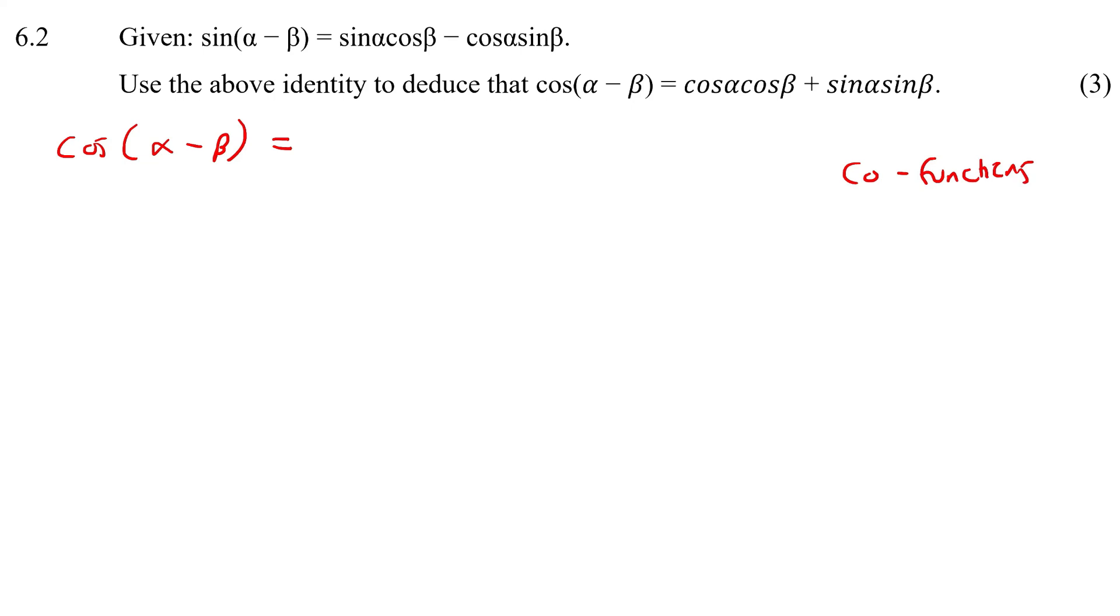I know the way that works is, for example, let's rather write this around. If I have cos(x), then I know that's sin(90 - x), for example. That's a co-function. So think of this as x. If that is x, then I can rewrite this as sin(90 - x).